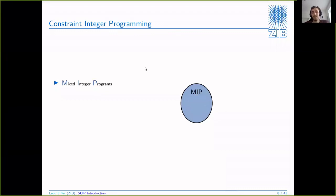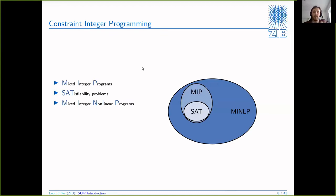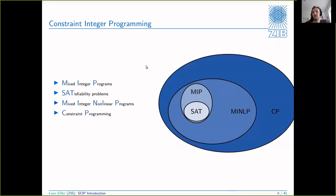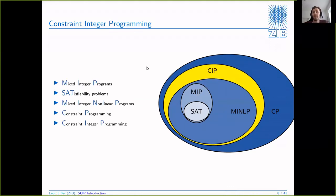Let's put everything together. We have mixed integer programs as one kind of problem; within these are satisfiability problems. Then you have a significantly larger problem class of mixed integer nonlinear programs. The largest problem class would be CP - essentially any kind of constraint, everything goes, without needing the restriction that fixing integer variables leaves an LP or NLP solvable subproblem. With exactly this restriction - that you need to be able to solve a subproblem when you fix the integer variables - you have constraint integer programming, which is exactly the problem class SCIP is designed to tackle.